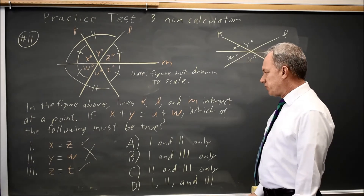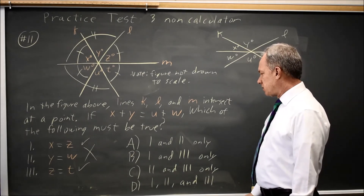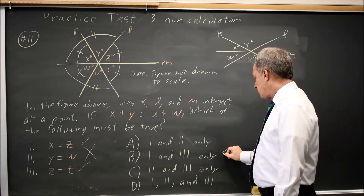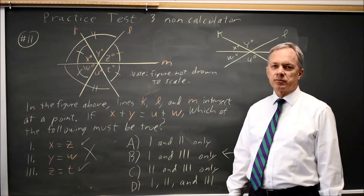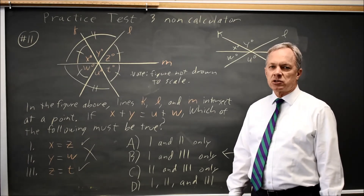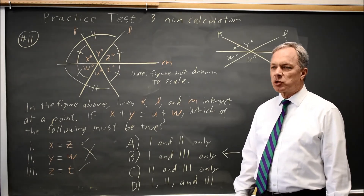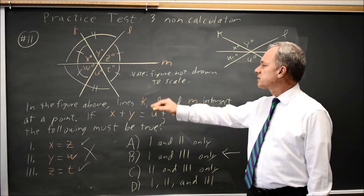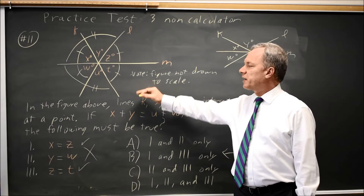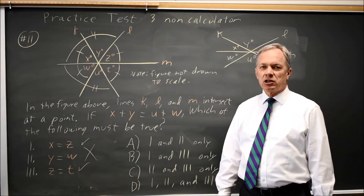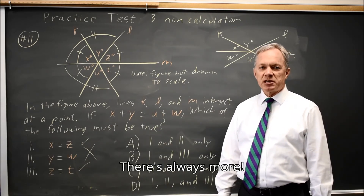That means the correct answer is that one and three only must be true, so that would be our choice here. College Board often asks about the angles at intersecting lines. Come back soon for my next math video. With math, there's always more.